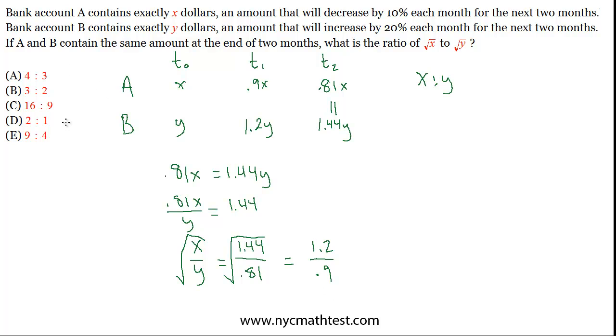Only problem is the answer choices are given in integer ratios, so we have to somehow turn this into an integer ratio. A quick way to do that is just to multiply numerator and denominator by 10, so this is the same as 12 over 9, and then it'll be easy to think about how to reduce that. So both of those are divisible by 3, so you can divide both by 3, and you'll get 4 over 3. That is answer choice A.